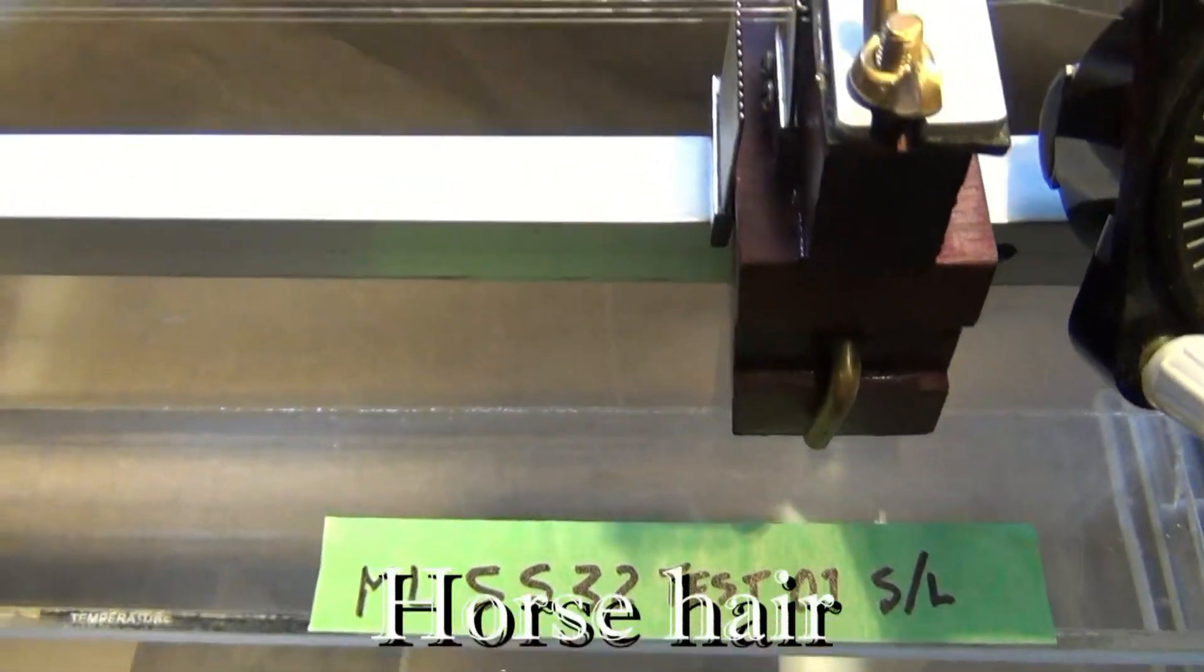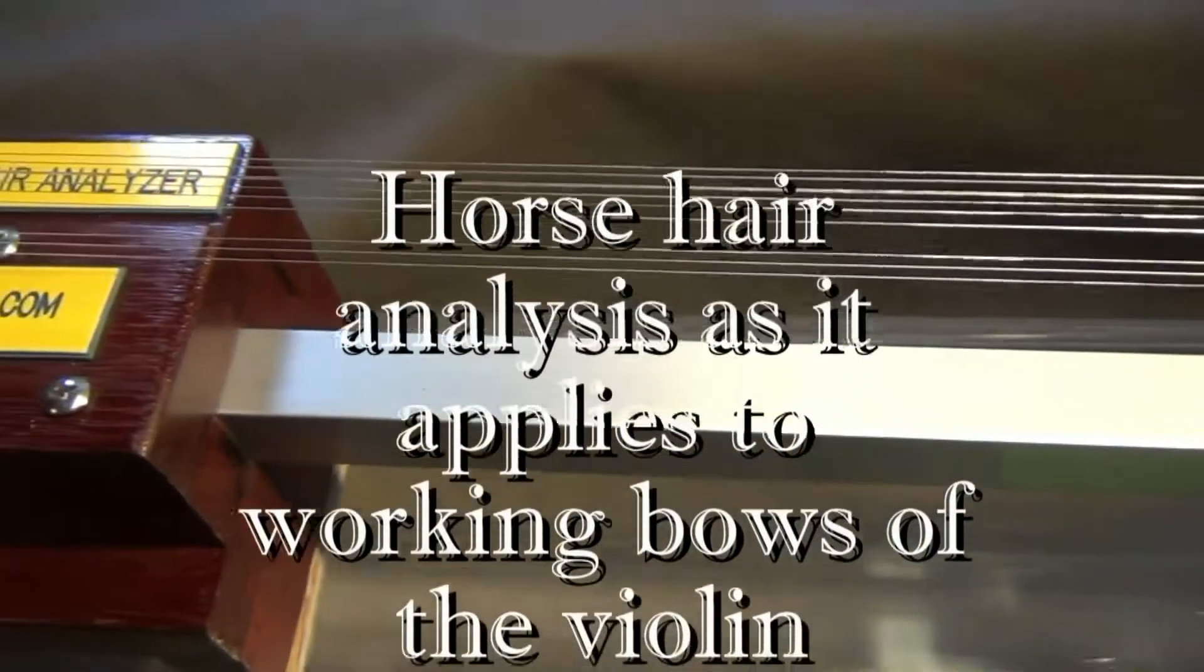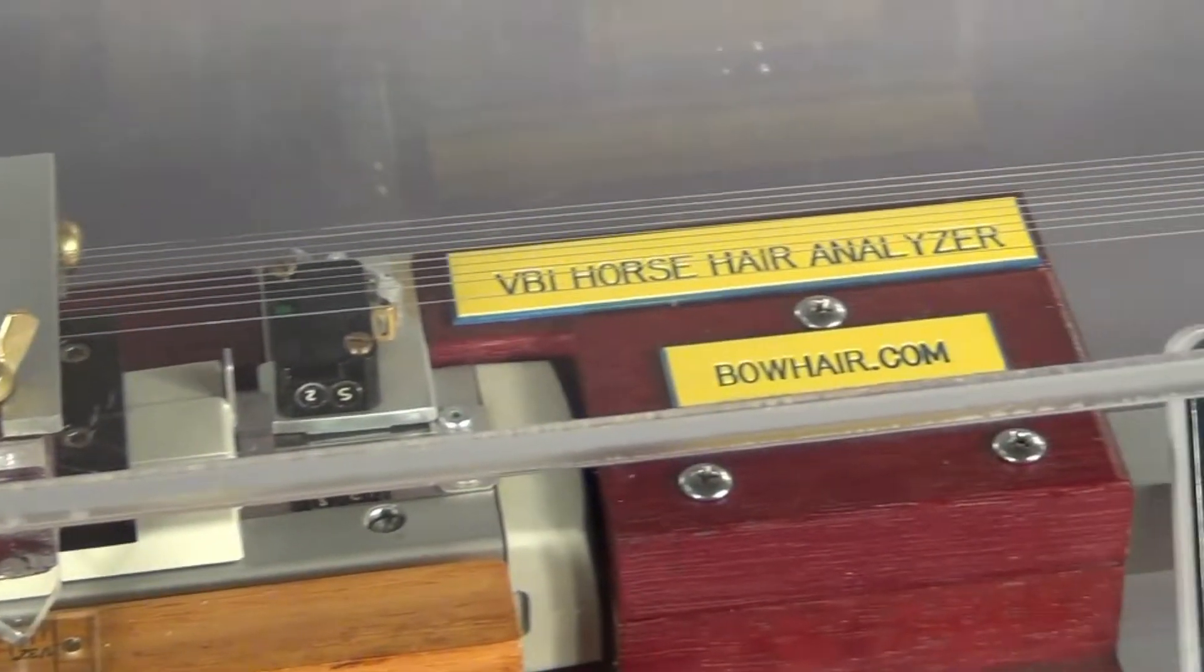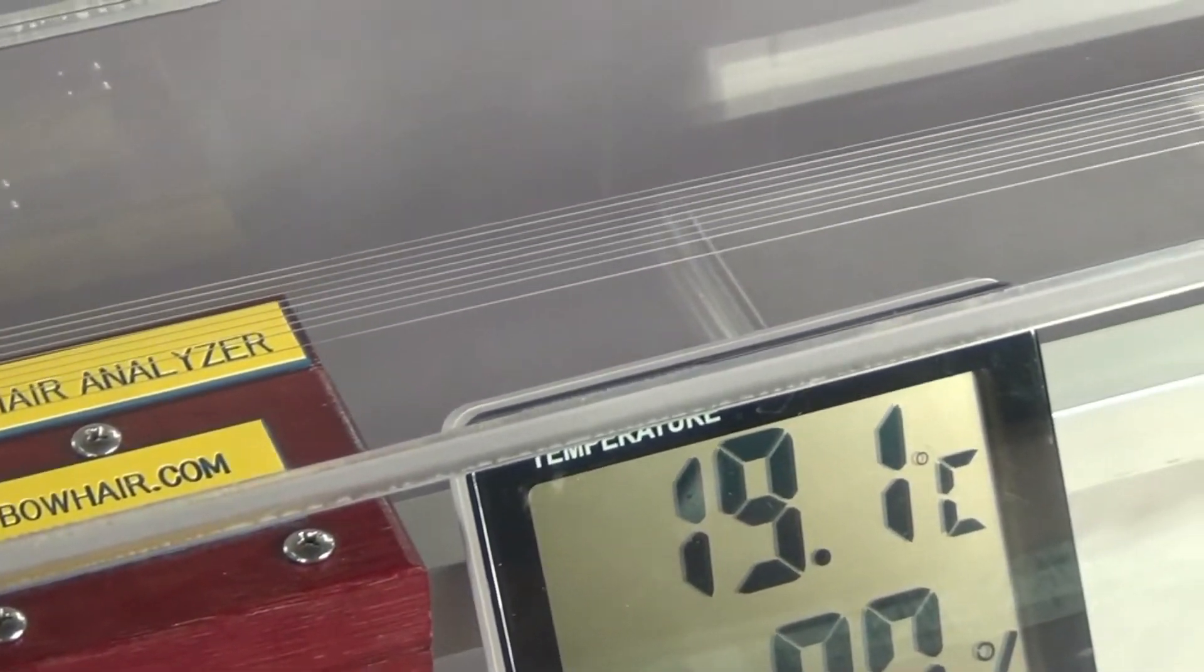At VanBode Instruments, we constantly test samples of the hair we sell to determine quality. In our test facility, we fasten 10 hairs randomly selected from a specific brand between two vices, 16 inches apart.